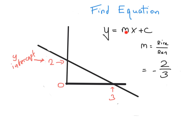Remember that m stands for the slope of the line, and can be calculated by getting the rise over the run. So the rise in this case would be this part here, which is 2 in length, from 0 to 2, and the run would be from 0 to 3, so that's 3 in length. So it's going to be 2 over 3, and it's going to be negative because it's going downhill.